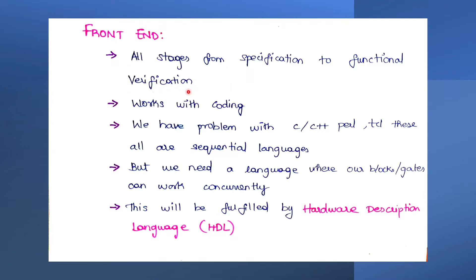When we talk about SystemVerilog, Verilog, or any other HDL — hardware description language — a question comes to mind: why are we not using C or C++ in the VLSI field? Because C, C++, Perl, and Tcl are all sequential languages, meaning all code executes sequentially, not in parallel. But in the VLSI field, we need a language that works in concurrent mode.